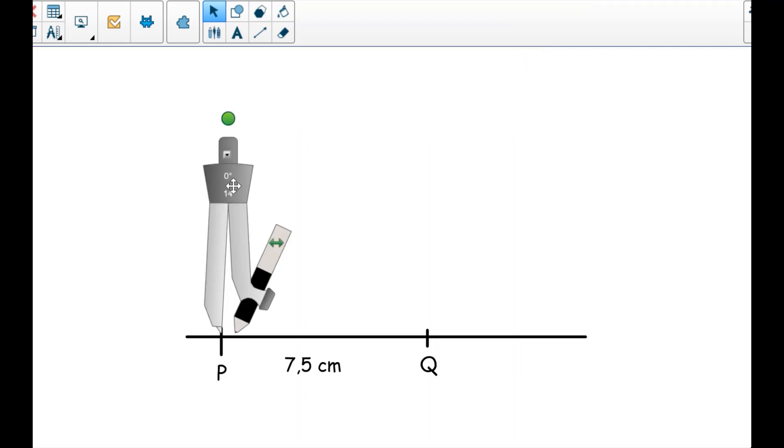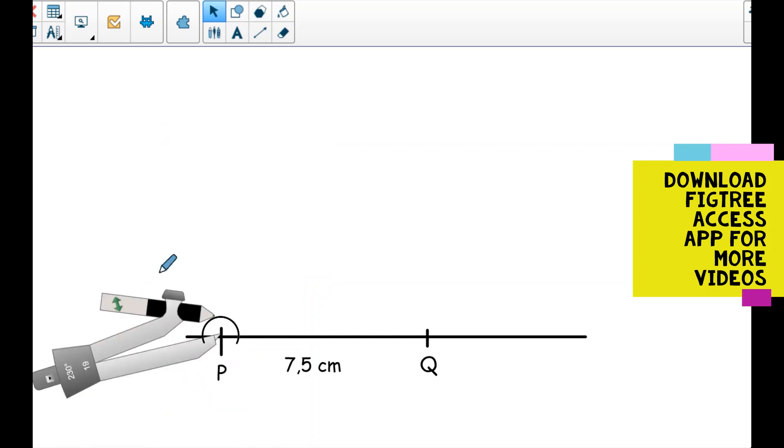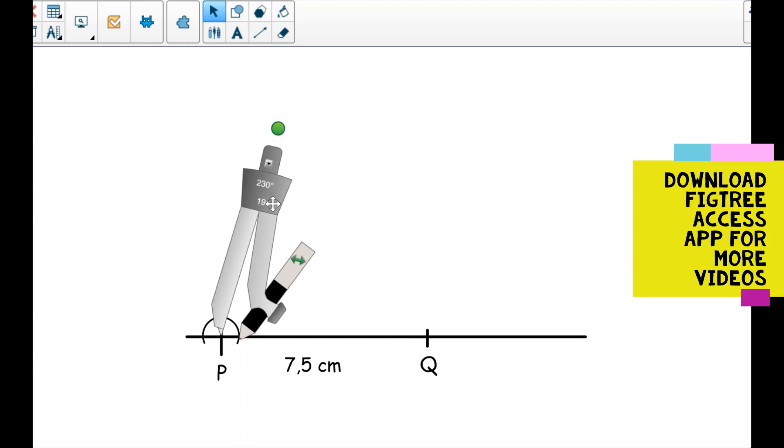This is where angle PQR is, at point P, that will be 90 degrees. So this is how you can construct your 90 degrees. You can also watch video lessons in the Fitri Access App for step-by-step tutorials. This is my arc that will enable me to construct 90 degrees in a faster and easier way.